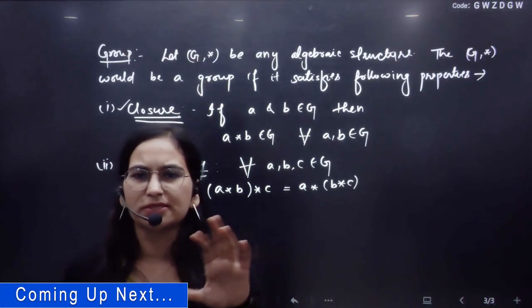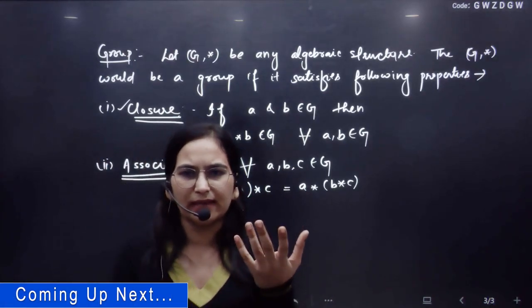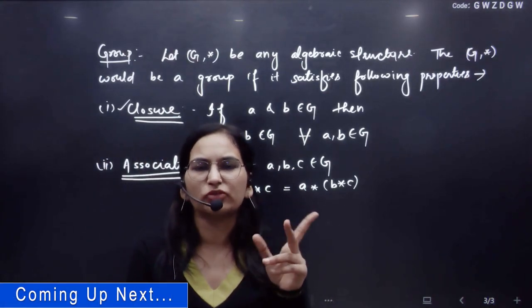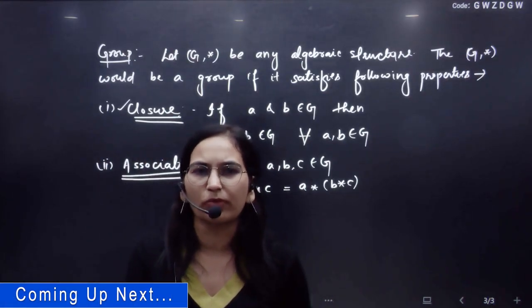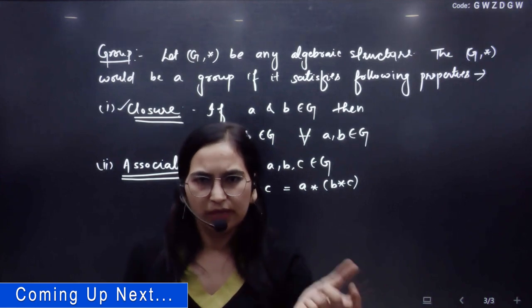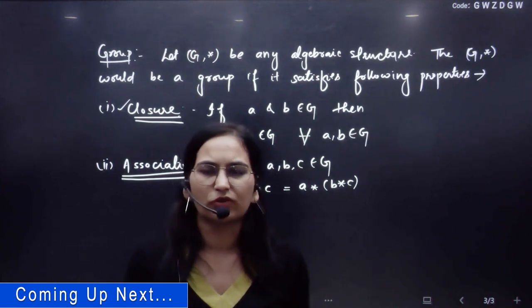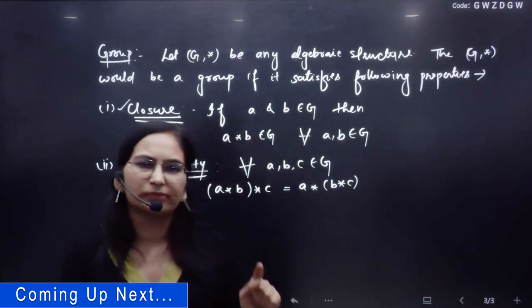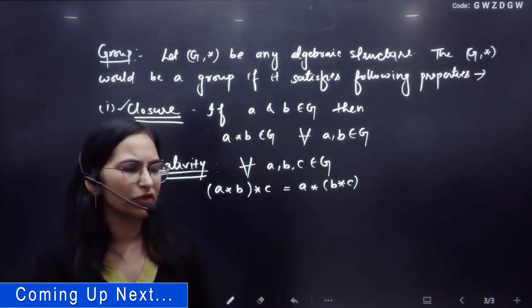It's associative. That means you have to operate on the first two elements. It is always going to be the same. That is the property of associativity.